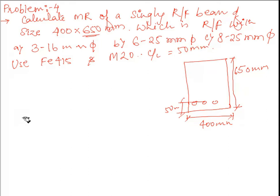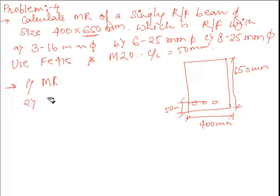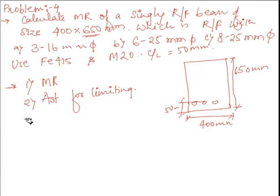First we need to identify what we need to calculate. Step one: we need to calculate the moment of resistance for all three cases. We also need to find the area of steel Ast for the limiting condition, that is Ast limiting.